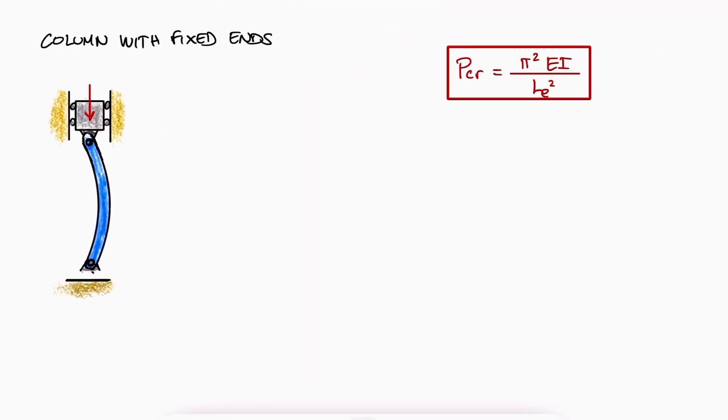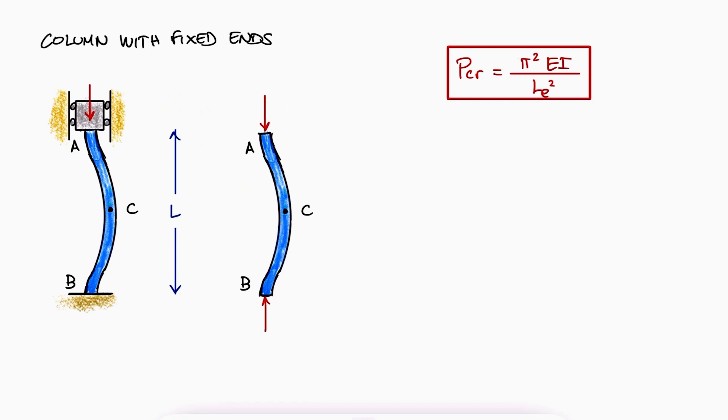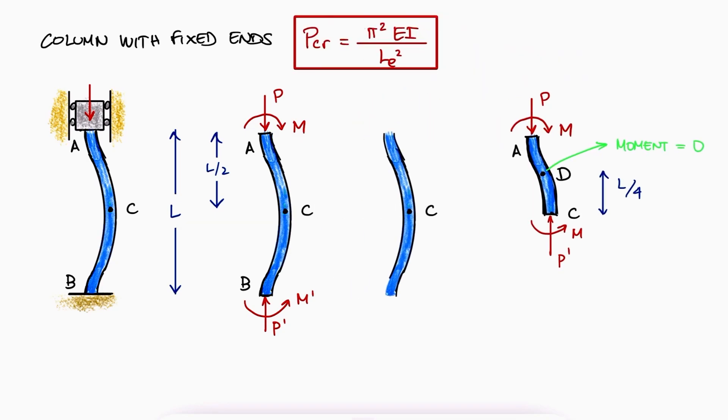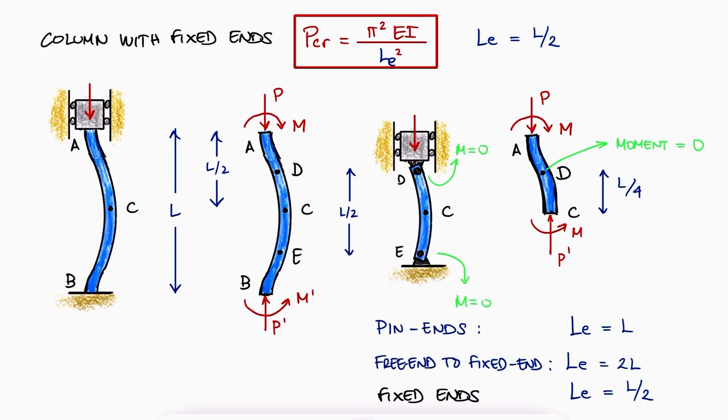Now for a column with two fixed ends, AC and BC are symmetric because of the loads P and P' and the moments M and M'. Section AC would also be symmetric about its midpoint D since the moment about D should be zero. Since the moment at the pins of a pin ended column are also zero, section D to E would be just like a pin ended column of length L over 2. The effective length of a fixed end column is therefore L over 2.